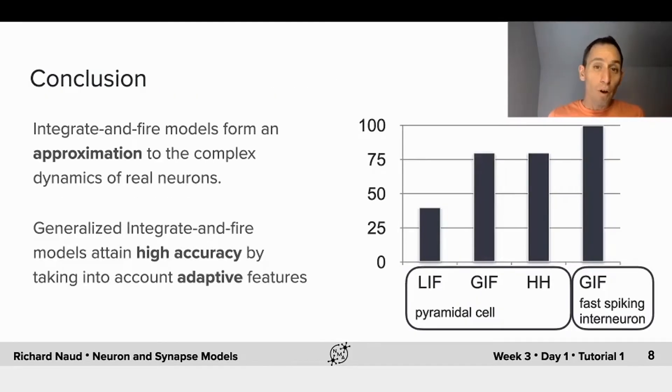So overall, the take home from all this is that neurons act approximately as integrate-and-fire models. But generalized integrate-and-fire models integrate some adaptive features, and that allows this model without much more complexity to capture the behavior of real cells.